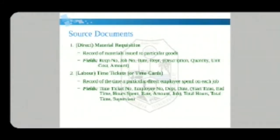For making job costing, source documents are required. There are two types: first is the direct material requisition, and second is labor time tickets. Direct material requisition means keeping a record of materials issued to particular goods. The fields recorded are: requisition number, job number, date, department, description of material, quantity, unit cost, and the total amount required to buy that material.